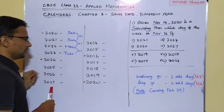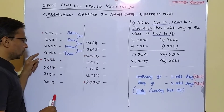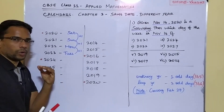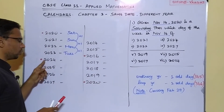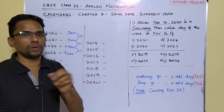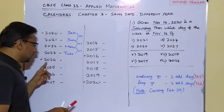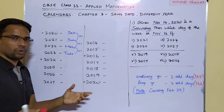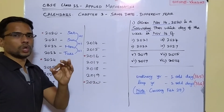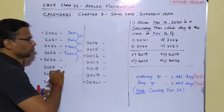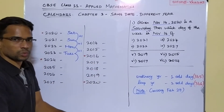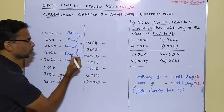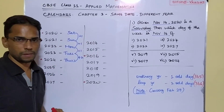Now from 2023 November to 2024 November, we need to be very careful. When moving from 2023 to 2024, we are crossing February of 2024 — and since 2024 is a leap year, February has 29 days. That means 366 days are covered, giving two odd days. So we do plus two: Tuesday plus two is Thursday. Therefore 2024 November 14 is a Thursday.